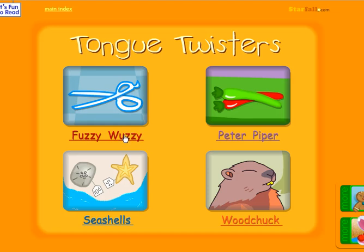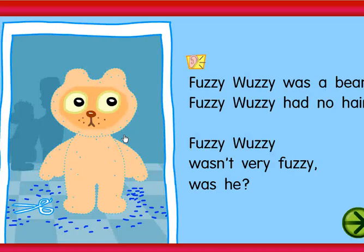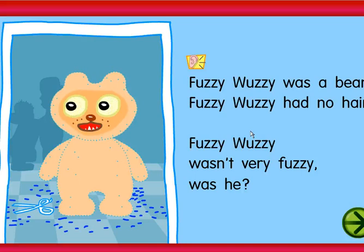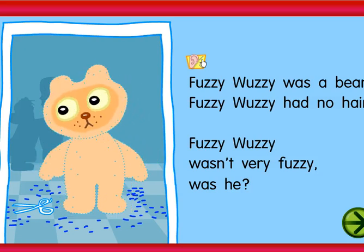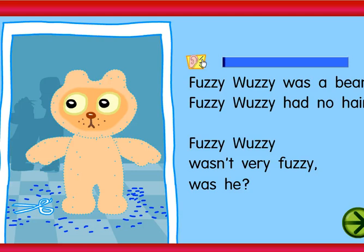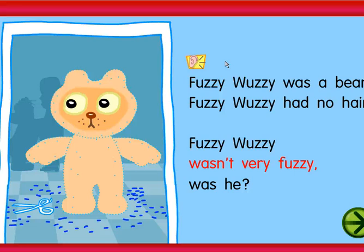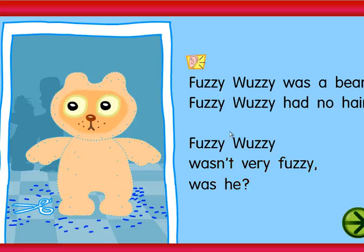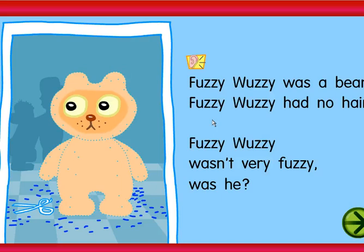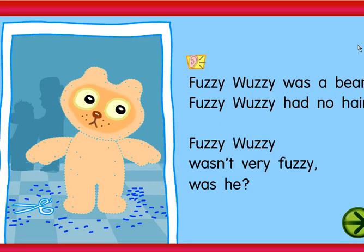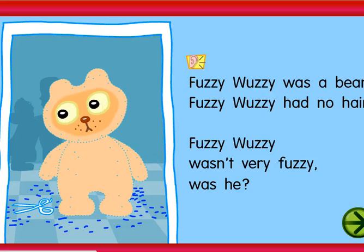I want to do Fuzzy Wuzzy, so I'm going to click on the name Fuzzy Wuzzy. Now I might not be able to read this, so I'm going to click on the ear so I can hear the words being spoken to me. Fuzzy Wuzzy was a bear. Fuzzy Wuzzy had no hair. Fuzzy Wuzzy wasn't very fuzzy, was he? Did you notice that the letters lit up when they were being read? That's a great way to track your print. Now I'm done with this tongue twister, so I'm going to go back by hitting the X at the top of my page.